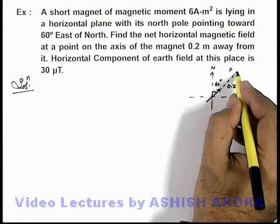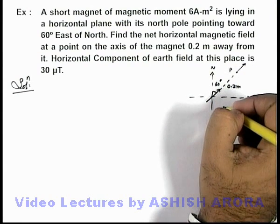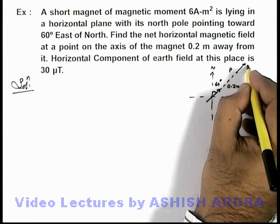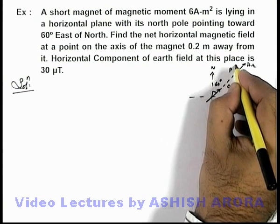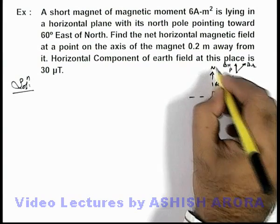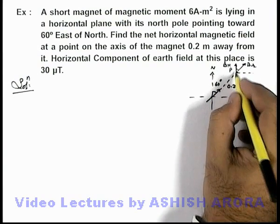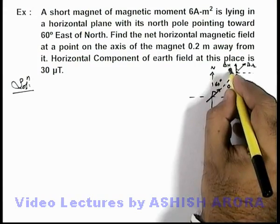So at this position, due to the magnet there will be a radial magnetic field in existence which is B_r, and the other is the horizontal component of Earth's field B_h which exists in the direction toward north. So here this angle is 60° and we are required to find the net field at this point P.